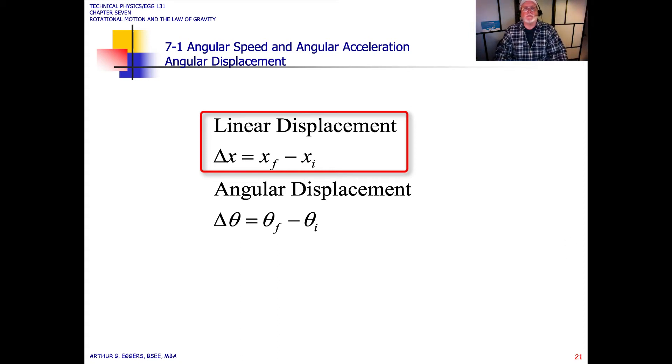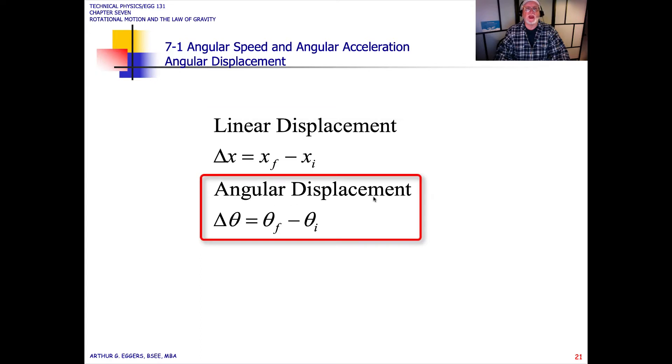We move now from linear to angular displacement. Before we used the distance, say on the x-axis, from a final to an initial point to understand the linear displacement. Now in angular displacement, since we're in more of a polar relationship, we're going to look at the distance that the angle makes as it scribes out the arc length or the circumference of that circle.